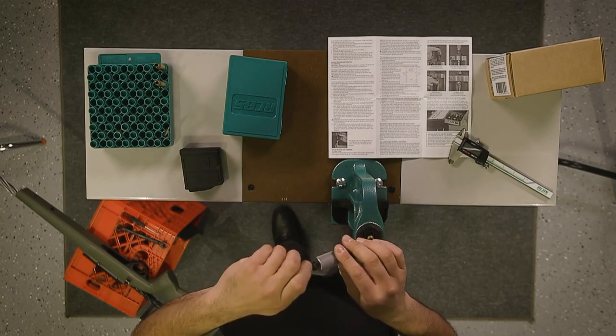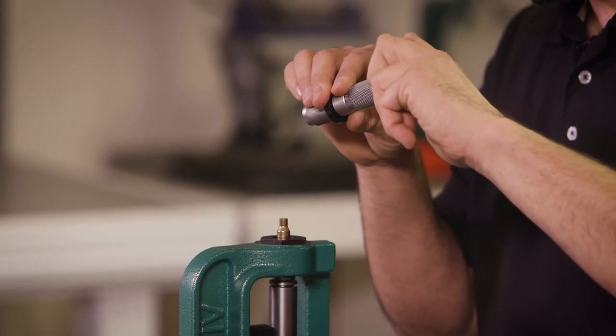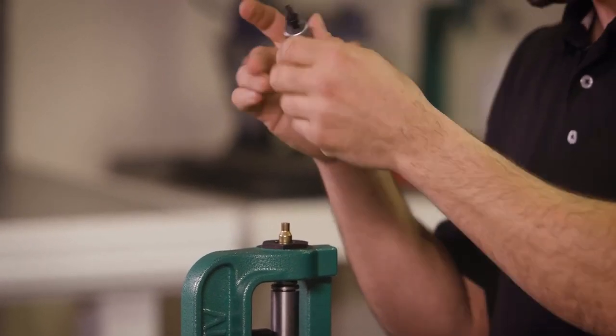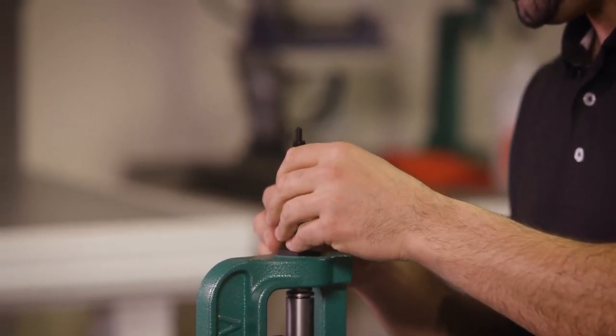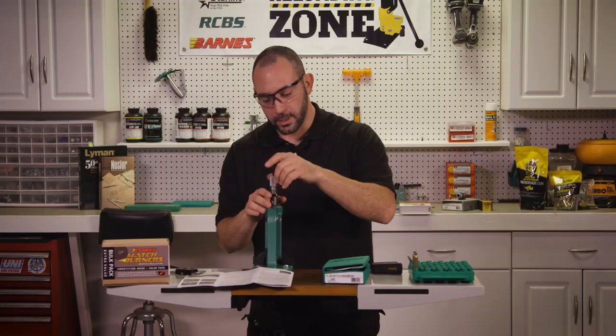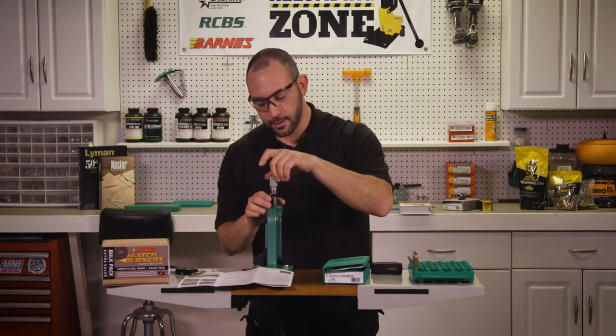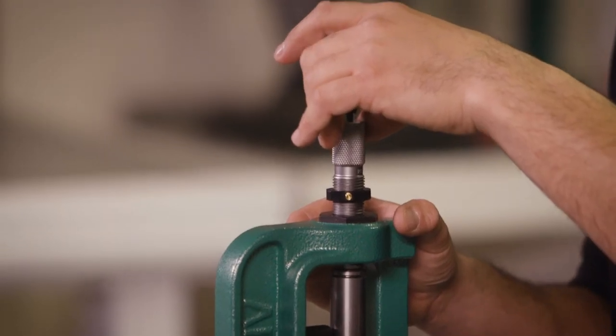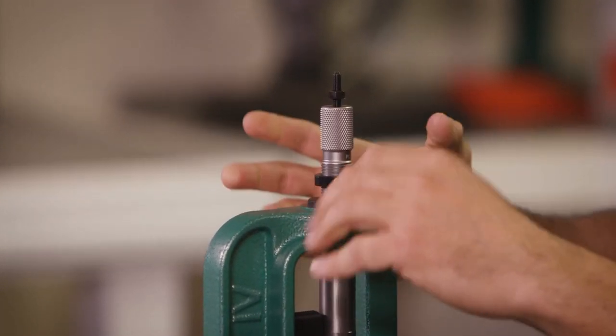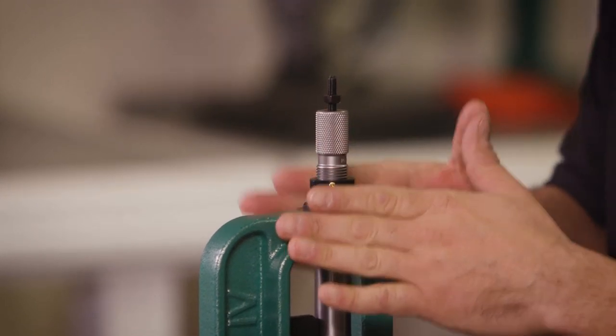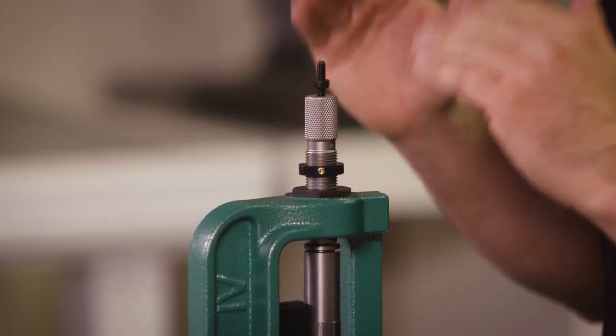We're going to back out the seating stem as far as we can to make sure that it doesn't start seating the bullet until we're ready. With that stem all the way out, we screw our die in until it makes contact with the case mouth. Right here, this position is where it's going to start entering the area of the die that would crimp it.